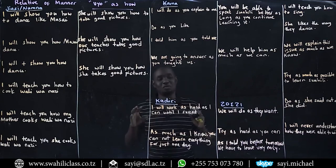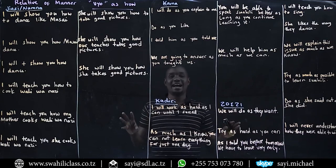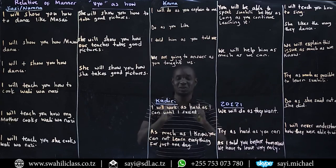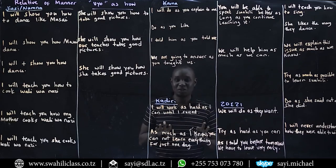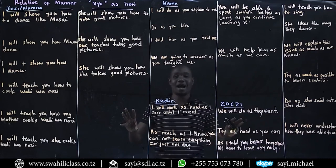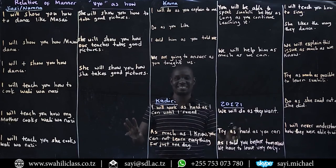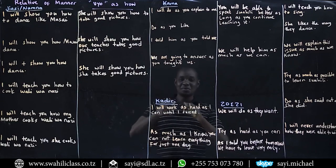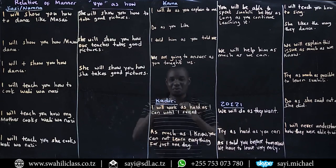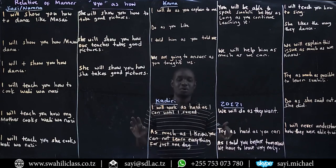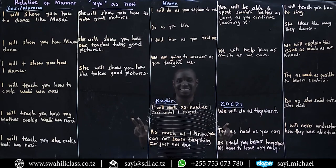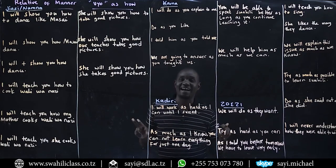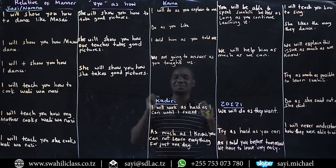Tunaendelea kujifunza ki Swahili, and here we are learning the High Intermediate Course. So this topic is for High Intermediate students. So if you are learning this topic and you are able to understand it fully, you, my friend, are a High Intermediate student.